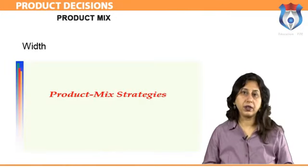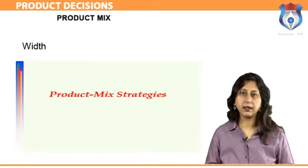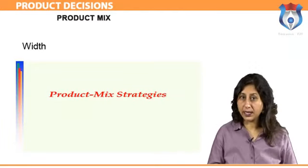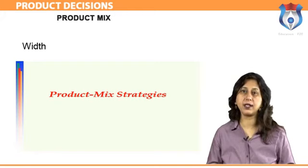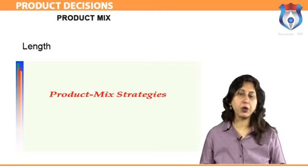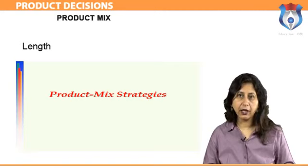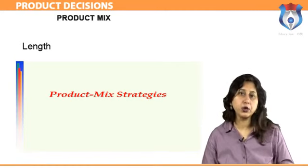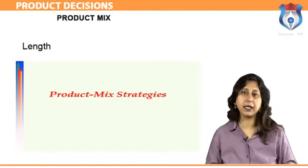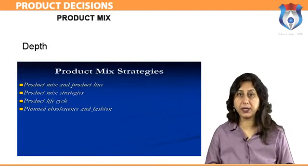Width: the width of product mix includes all the product lines that a company sells. For example, if a vitamin company sells various vitamins, diet products, and sports drinks, its product width is three. Length: the length of a company's product mix pertains to the total number of products the company sells. For example, a small consumer products company may have three product lines: snacks, cereal, and canned meats.